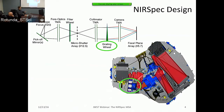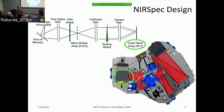The micro shutter array is located in the optical path at a focal plane where the light is focused — either at the MSA, the IFU, or the fixed slits, depending on which mode is being used. The light is then collimated and directed onto the grating wheel, and finally imaged onto the focal plane array. We have two detectors butted up against each other with spectra dispersed onto one or both arrays.